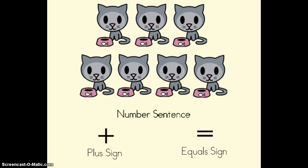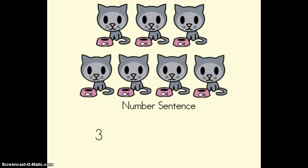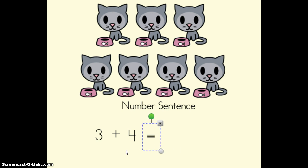Let's look at how to write a number sentence for the addition story and picture that we just looked at. In our story we started with three cats eating, so we're going to start with that first small group — the number was three. Then we had four more cats eating, so when we're adding those groups together we need to use a plus sign. So we had three cats plus four more cats. Then we use an equal sign. The equal sign tells us that whatever is on this side needs to be the same on the other side.